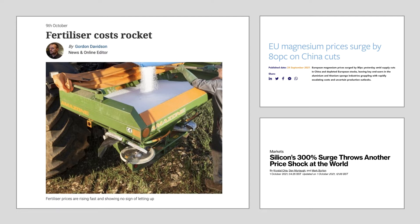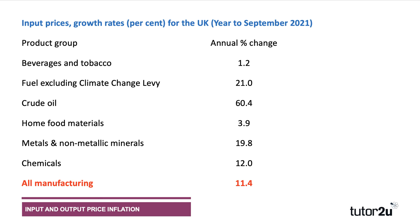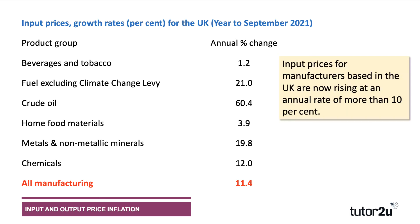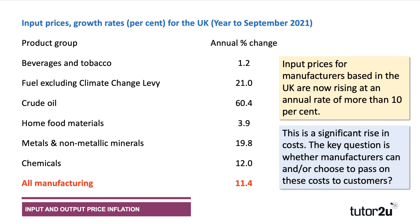Standard-grade silicon is needed by car makers to produce lightweight engine parts. This table from the UK shows the annual rate of input price inflation across a range of product groups. Overall for manufacturers, input price inflation as of September/October 2021 is now more than 10% — the highest rate for many years. The cost of crude oil is 60% higher than a year before, metals and non-metallic minerals are nearly 20% higher, and chemicals are 12% more expensive.